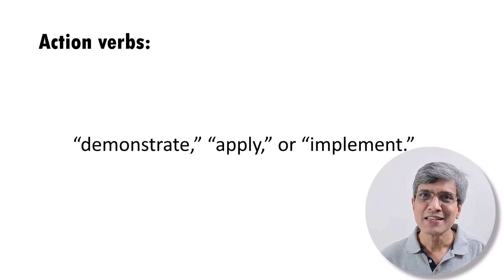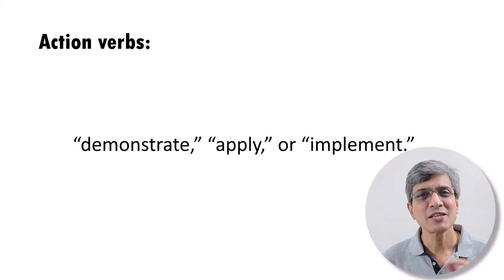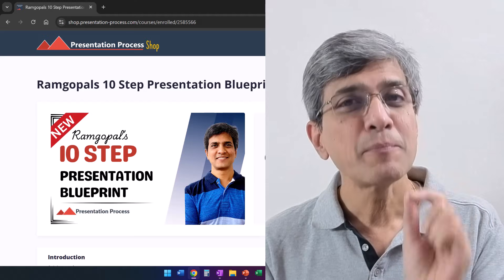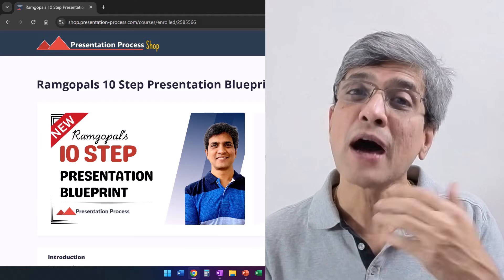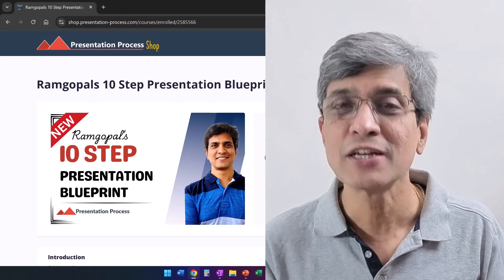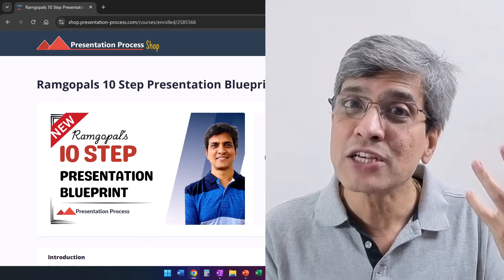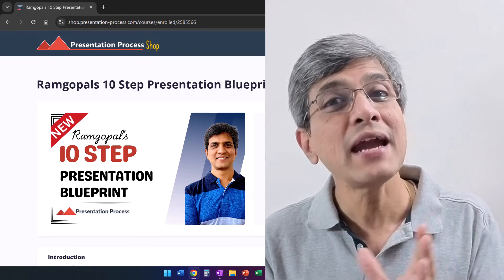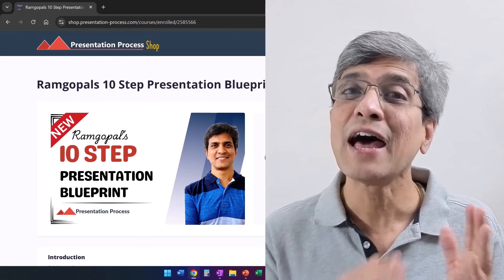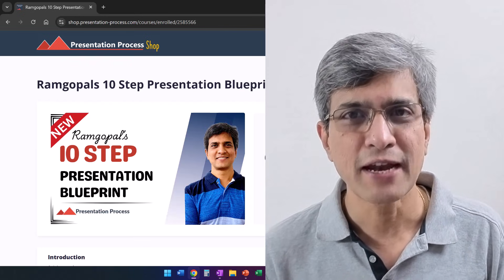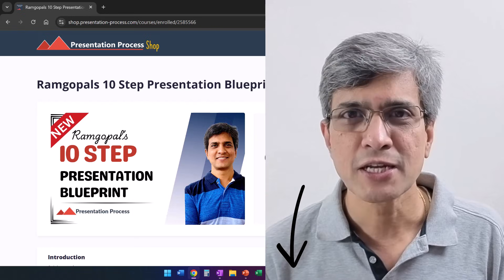If you too want to learn how to improve the effectiveness of your presentation objectives using techniques like Bloom's Taxonomy and specific action verbs, then I have a program for you called the 10-Step Presentation Blueprint. It's a simple, practical, step-by-step blueprint that shows you how to create an effective and engaging presentation from scratch — right from ideation of the content to creating the slides, complete with notes. The link to the program is in the description box below the video.